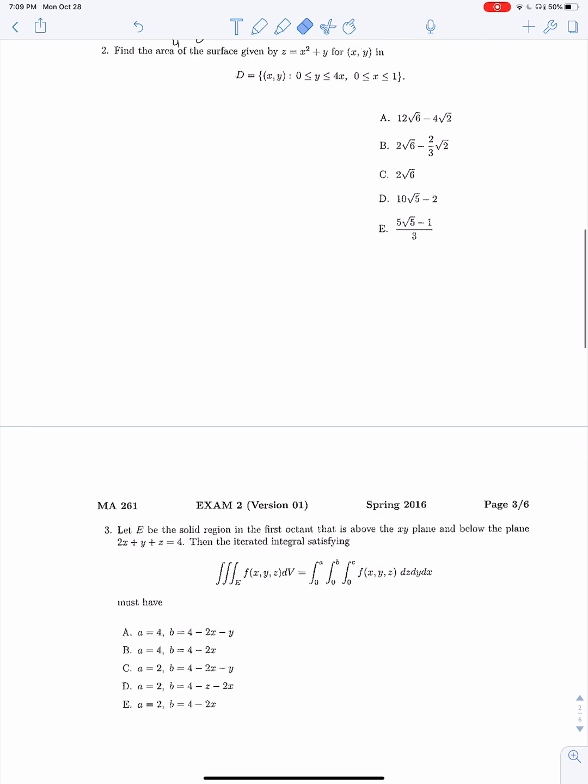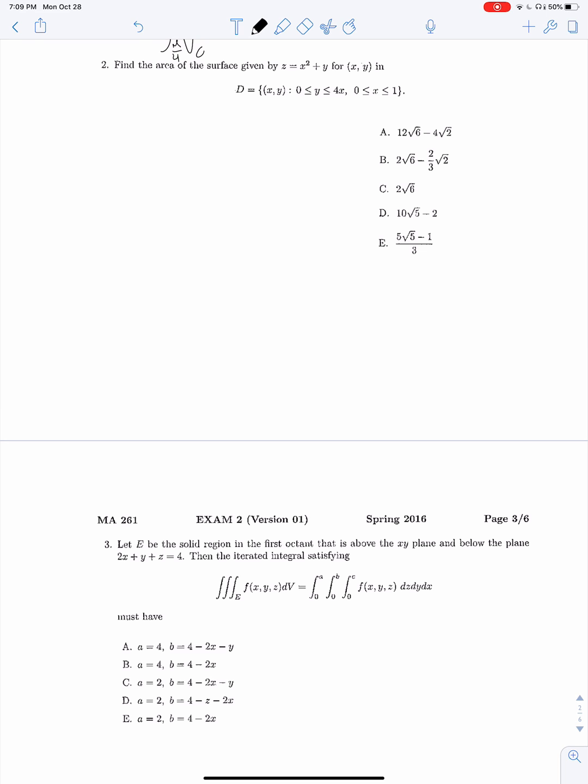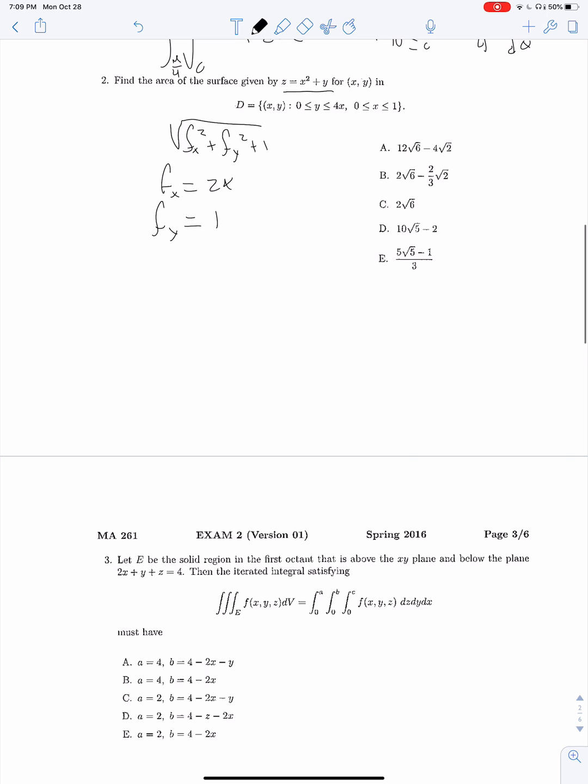Moving on to question 2. Find the area of the surface. Same disclaimer I keep giving: we will not have surface area integrals, so go away if you're trying to prepare. But we'll do it anyway. The integrand of a surface area integral will be made out of fx squared plus fy squared plus 1. We can compute that because we have our z equals up here. So fx is 2x and fy is 1.